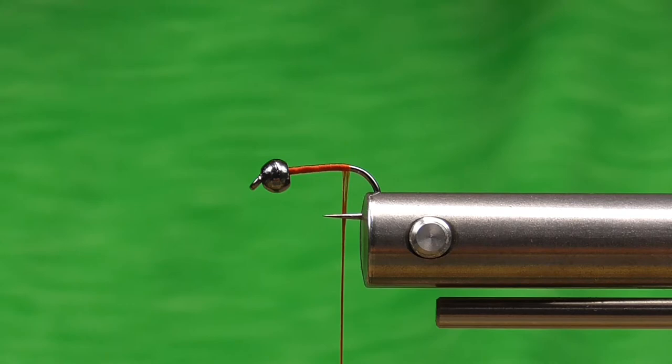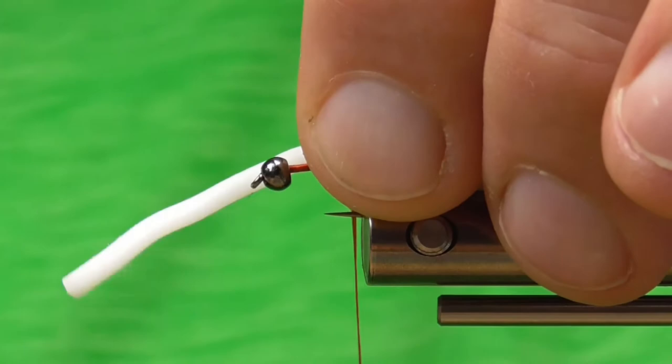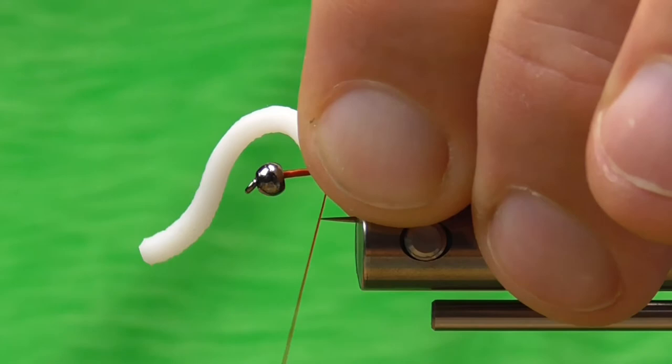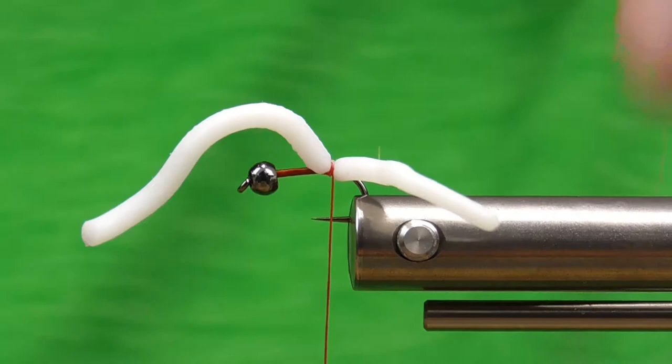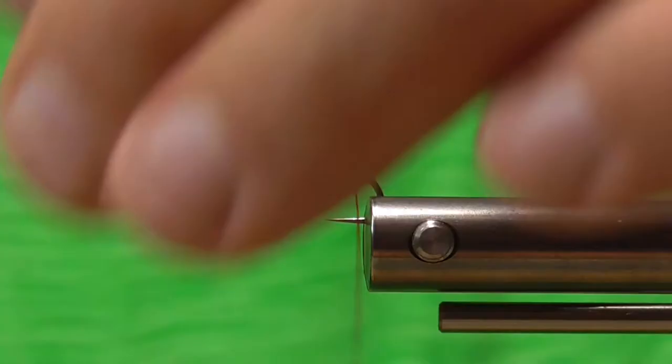So we're going to wrap our thread back to the back of the hook and I'm going to tie this worm in and I want to get it where I've got about an equal amount hanging off the tail and off the front and I'm going to do about four loose wraps around there. Then I'm going to pick up both pieces and come around back in front and around back just to really secure that down.